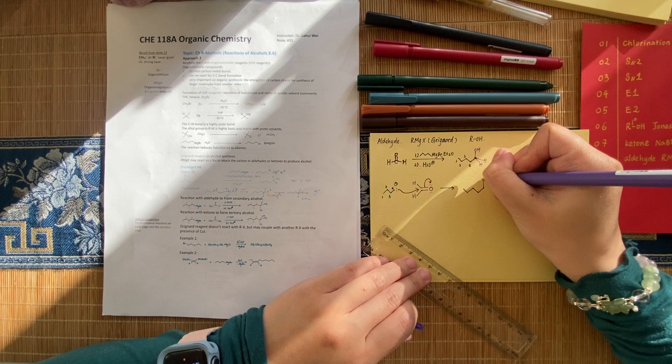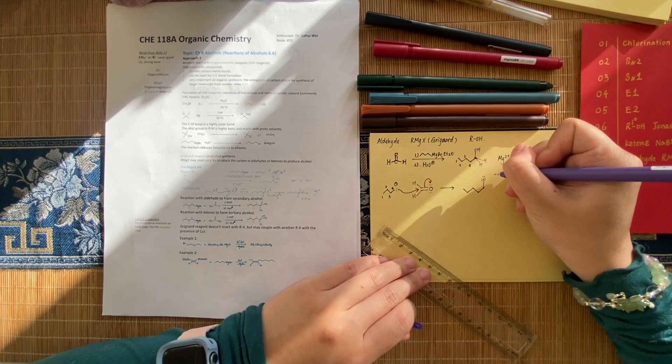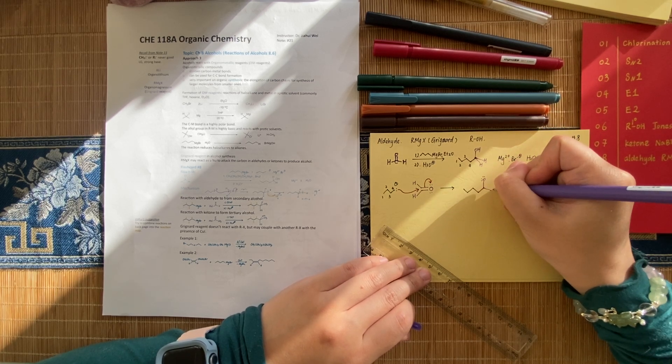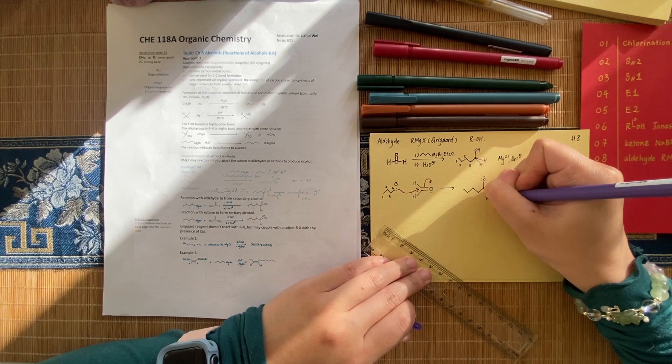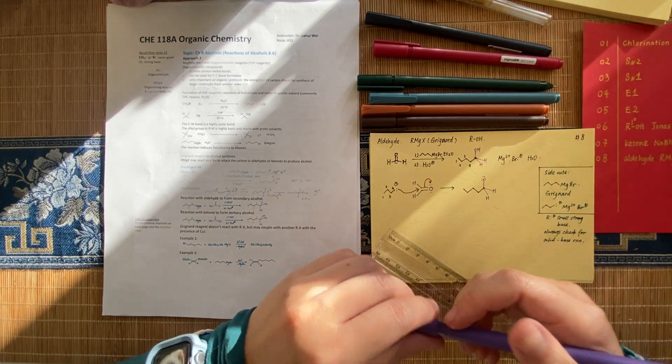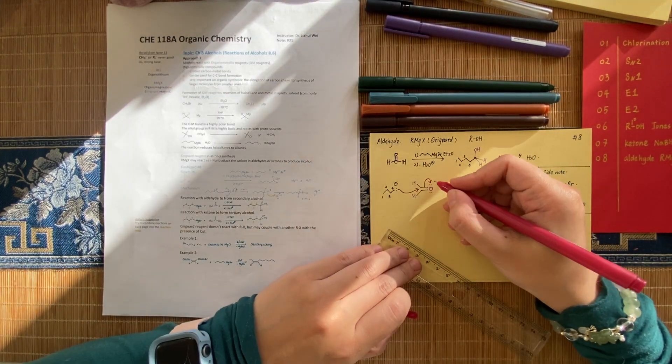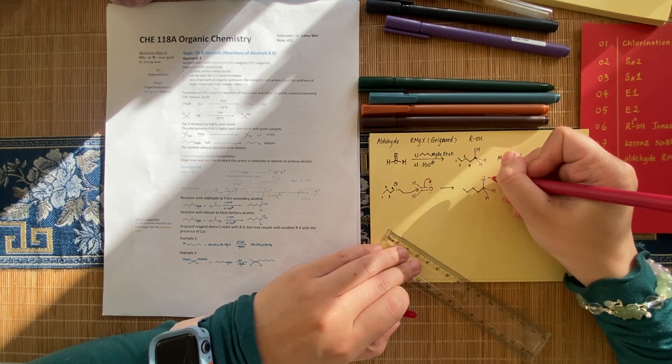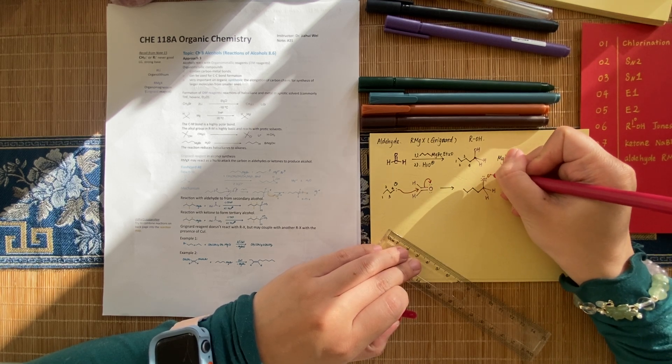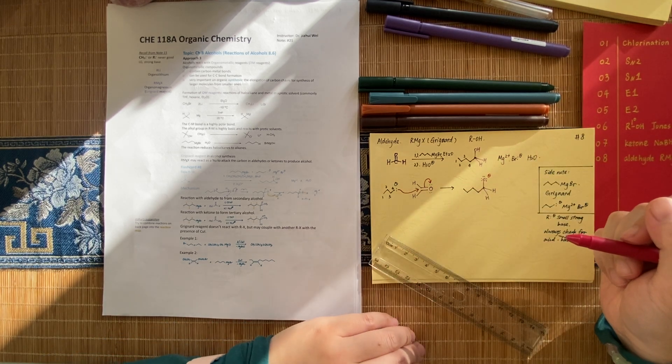All right. So O. Keep in mind, so far you have not formed the alcohol yet. You are just sitting this lone pair electron on oxygen. This is step one.